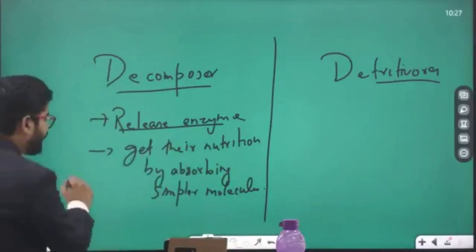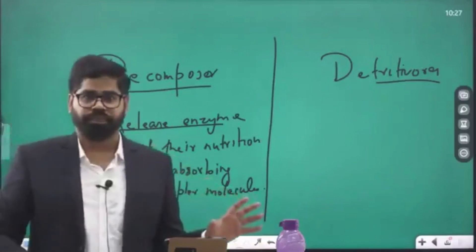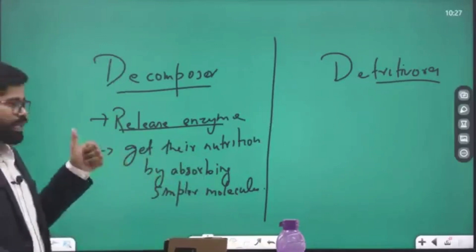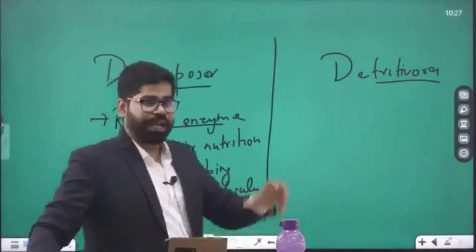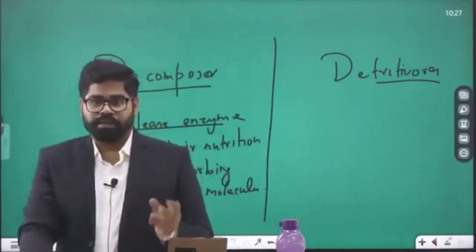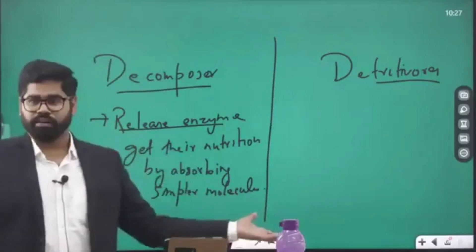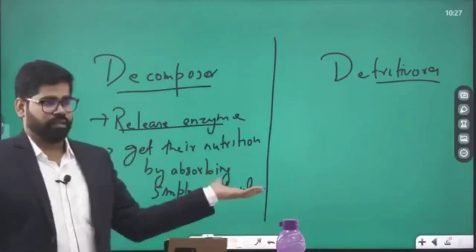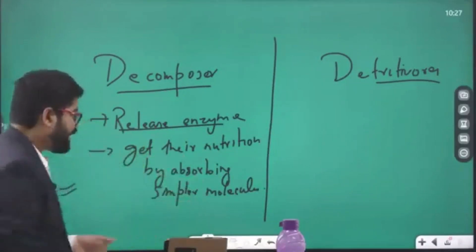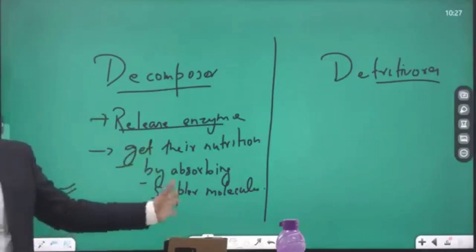They are first releasing enzymes, and once it has been broken down into simpler pieces, they absorb the simpler molecules and get their nutrition. Because they are very small organisms, they cannot consume the food and digest it within their body — they don't have a well-developed system. So they release the enzyme in the surrounding over the dead matter, it is broken down externally into simpler pieces, and then they absorb it to get their nutrition.